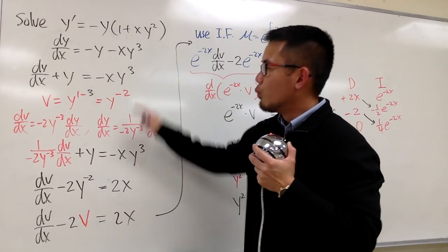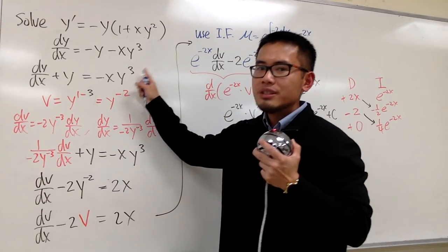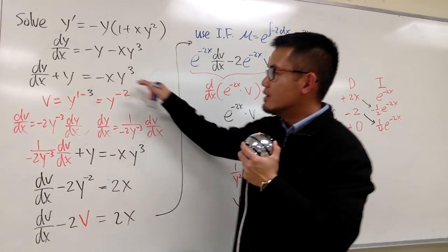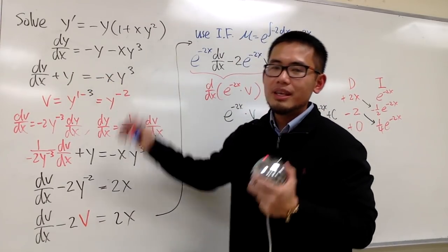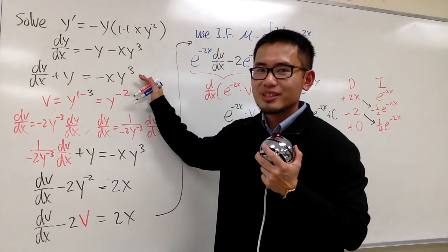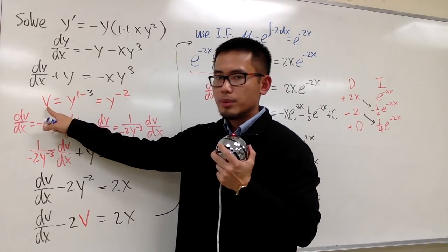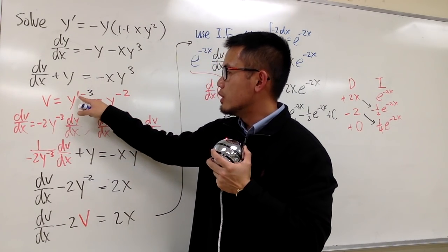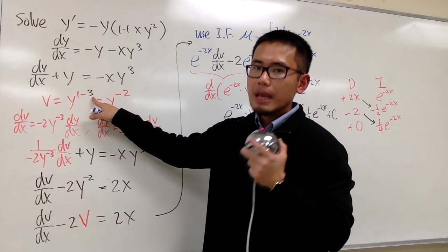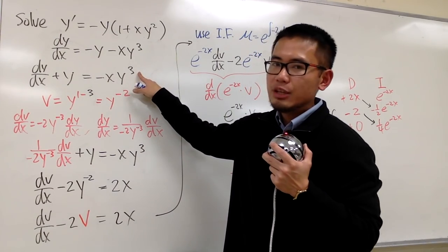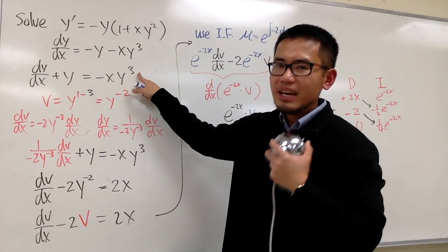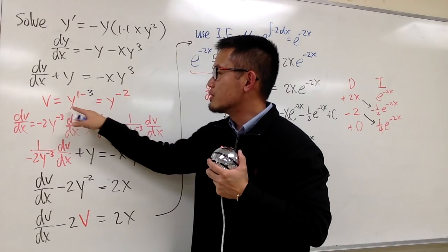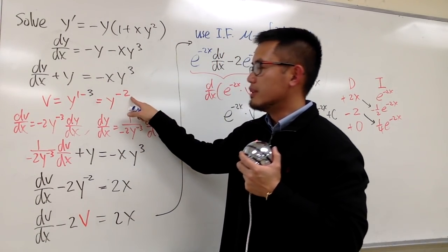This y to the third power is actually an easy fix, because we can use Bernoulli's substitution. Even though this is not linear at the moment, it will become linear after we do the Bernoulli substitution. We let another variable — usually we pick φ — equal to y raised to the 1 minus whichever this power is. This power can be any real number: one-half, negative, anything. But in this case it's 3, so we let φ equals y to the 1 minus 3, which is y to the negative 2.